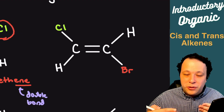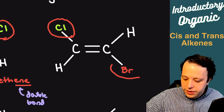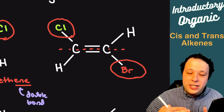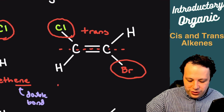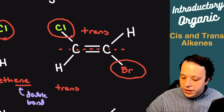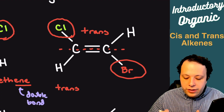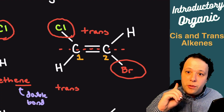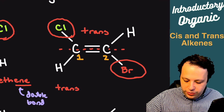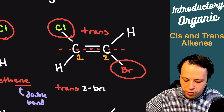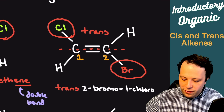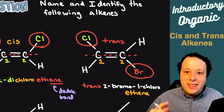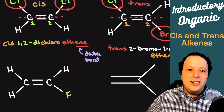For the next one, we look at the different groups — they don't have to be the same, as long as you can see whether they're opposite or together. In this case, looking at my railroad track, they are on opposite sides of each other, so they are trans. For numbering, since you have two halogens, you go by electronegativity. Chlorine has higher electronegativity, so it gets the number one spot. Then we alphabetize: trans-2-bromo-1-chloroethene is its full name.